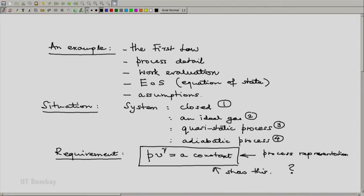And we will also be conscious of the steps where we will be using the closed system, the ideal gas, quasi-static process, and adiabatic process - these four items of information.